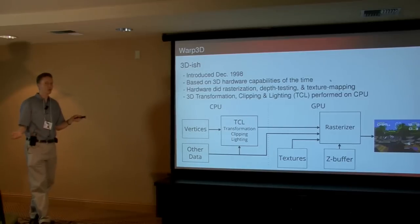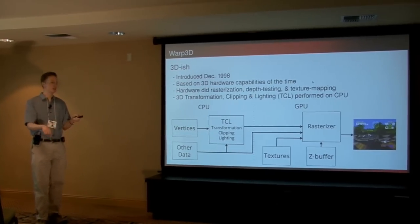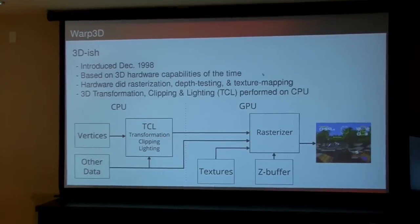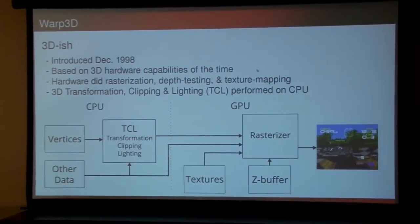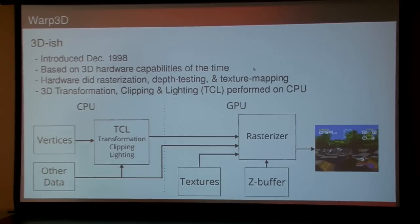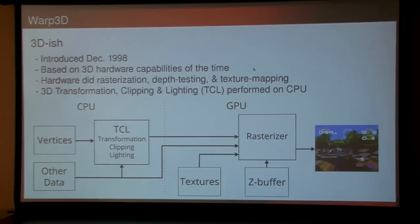Moving on to 3D — we're jumping back in time to about 1998. We got Warp 3D, which was based on the hardware of the time. The graphics card was basically doing the rasterization, and all of the 3D calculations — the transformation from 3D to 2D, the clipping and the lighting — all that was done on the CPU. So it was a step forward, you can do 3D, but the CPU's still got a lot to do.